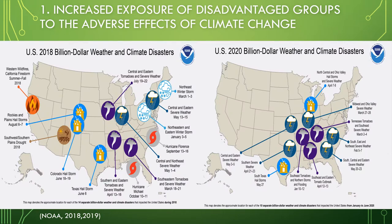To explain the first point — the increased exposure of disadvantaged groups to the adverse effects of climate change — the population affected the most are the poor, even though the poor contribute the least to climate change. With increasing global surface temperatures, the possibility of more droughts and increasing density of storms will likely occur, and these will more than likely affect disadvantaged groups. As the picture shows, in 2018 the U.S. had 14 separate billion-dollar weather and climate disasters. With the increased occurrence of climate disasters, minority groups will be more exposed and impacted by these disasters.